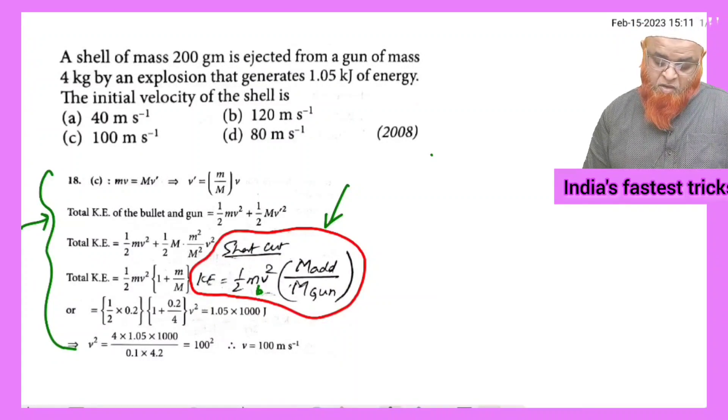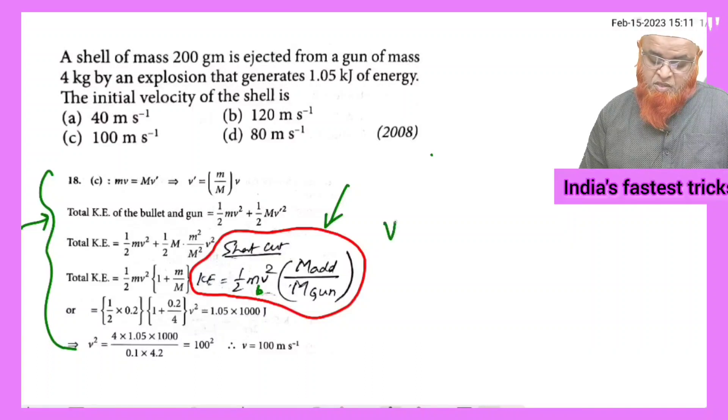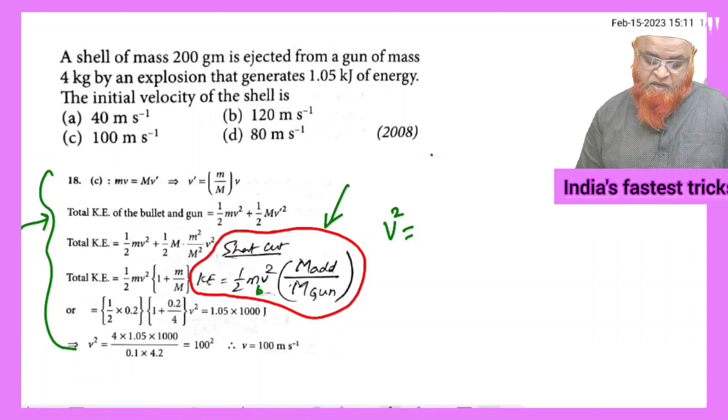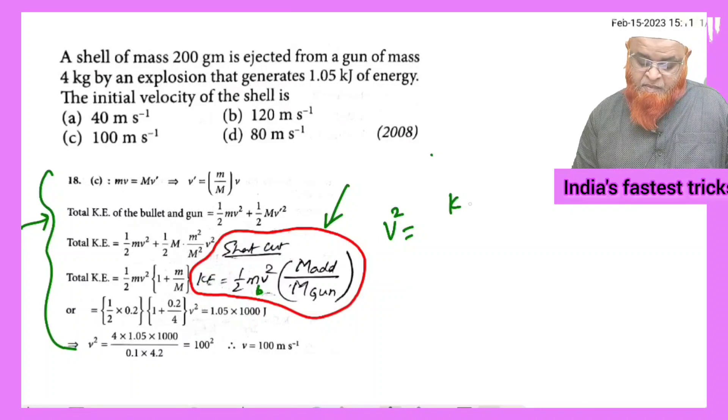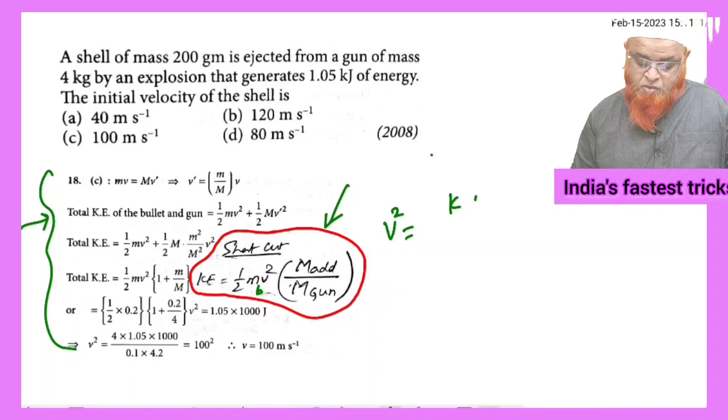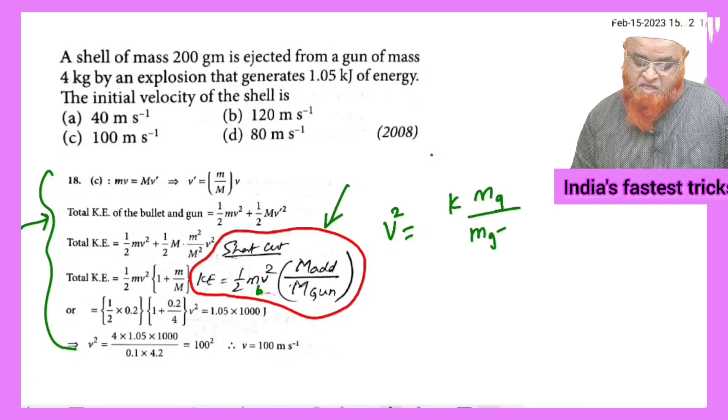From this I have to create one formula. You know that kinetic energy v squared means you have to find out v squared equals kinetic energy into mass of the gun by mass of the gun plus mass of the bullets.